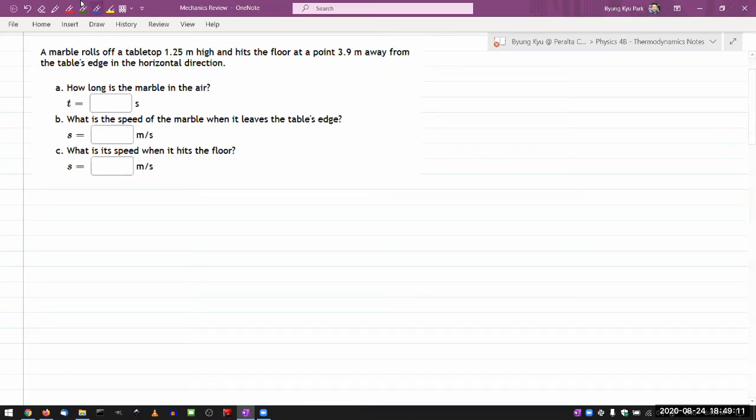So it says marble rolls off a tabletop, rolls off a tabletop 1.25 meter high. I like to draw figures as I try to figure out what information the question is giving me. So that's what I'm drawing. Marble is rolling off a tabletop of a certain height.